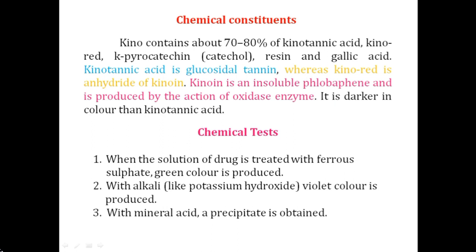Next is chemical constituents. This kino drug, pterocarpus, shows the presence of 70 to 80% kino tannic acid. The first major constituent is kino tannic acid. The second is kino red. The third is pyrocatechin, that is catechol. These are the tannins as secondary metabolites found in pterocarpus. You also need to remember resins and gallic acid. These five constituents are majorly present and are very important from the entrance examination point of view.